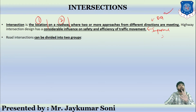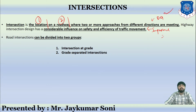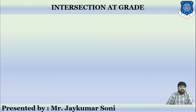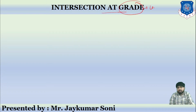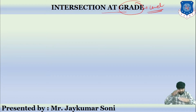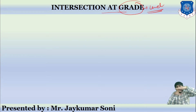Intersection can be divided into two major groups. The first is called as intersection at grade, and the second is called as grade-separated intersections. Grade means the level of road. If two approaches or more than two approaches are crossing each other at the same level, then it is called as intersection at grade. If there is a difference of height between the approaches, that is not called as intersection at grade.